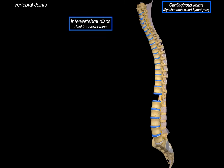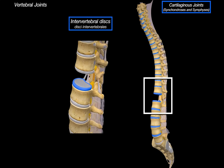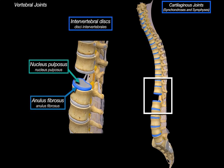Zooming out, we can see the intervertebral discs distributed along the entire vertebral column. Isolating one region, the intervertebral disc is made up of two distinct parts: the outer layer is the annulus fibrosus, consisting of concentric layers of fibrocartilage that provide strength and contain the inner parts; at the center is the nucleus pulposus, a soft gelatinous core rich in water content that functions as a hydraulic cushion, absorbing compressive forces and distributing them evenly across the disc.